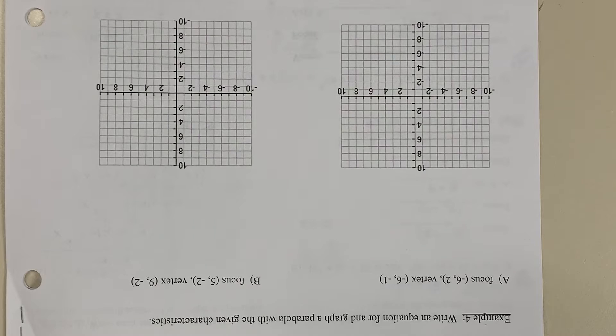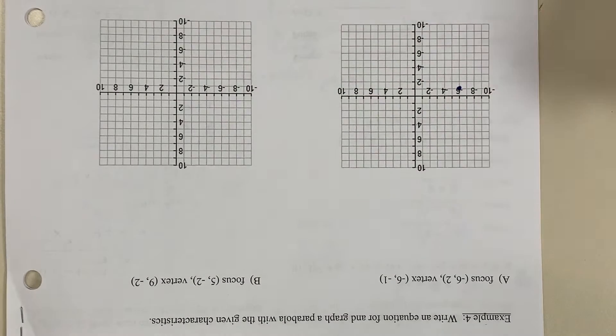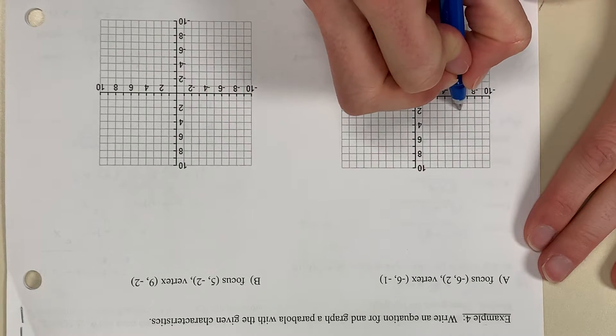First thing I like to do is graph the vertex. I'm going to go left 6 and down 1. And then my focus is negative 6, positive 2. So I'm going to go left 6 and up 2.